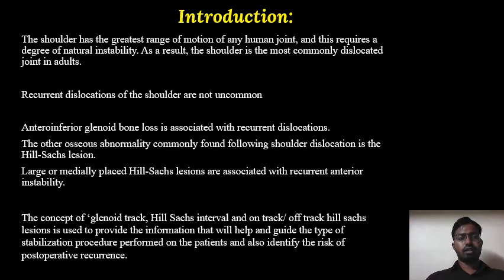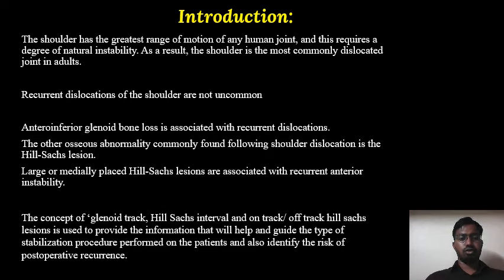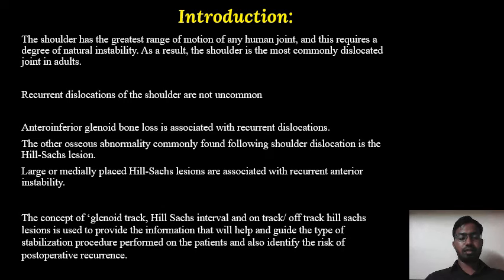The shoulder joint has the greatest range of motion of any human joint, and this requires a degree of natural instability. As a result, the shoulder joint is the most commonly dislocated joint in adults. Recurrent dislocations of the shoulder are also not uncommon. Antero-inferior glenoid bone loss is associated with recurrent dislocation, and the other osseous abnormality commonly found following shoulder dislocation is the Hill-Sachs lesion.